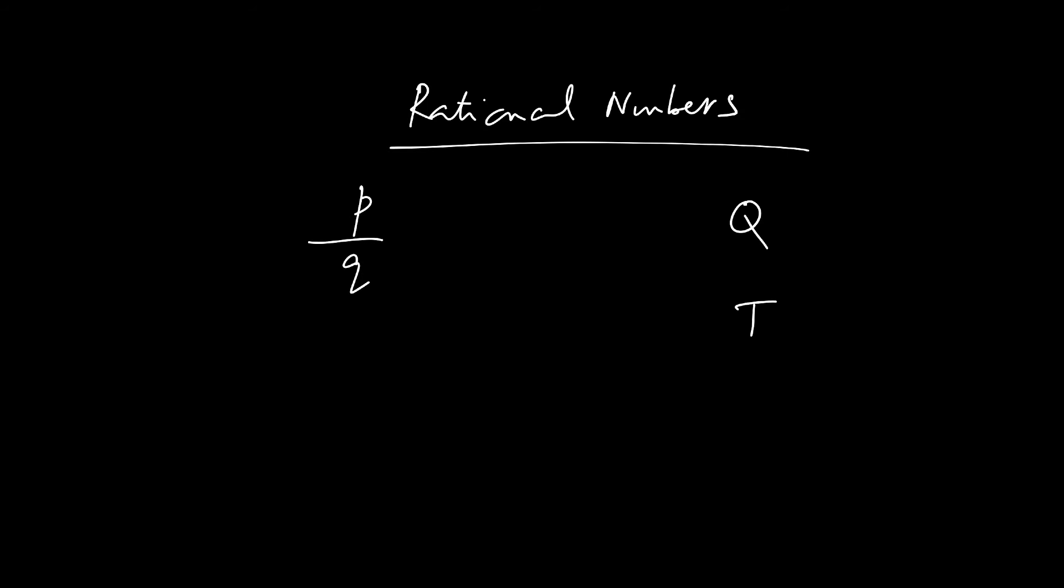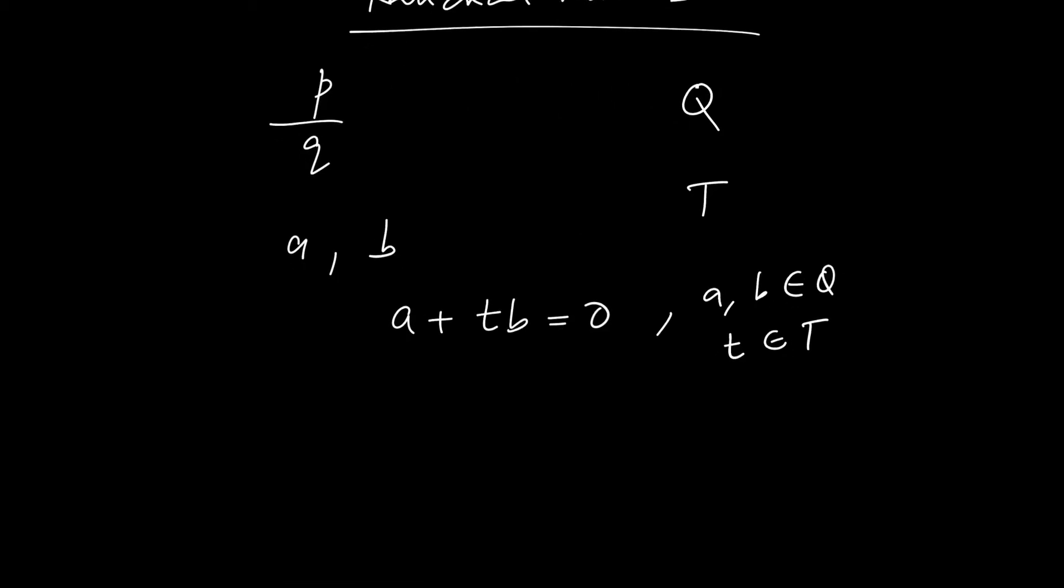Now we ask: if a and b are rational, a plus t times b equal 0. So what happens is that either a is zero and b is zero. That is, a plus t times b equals zero.